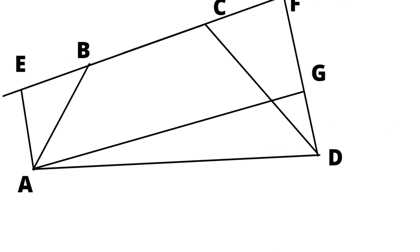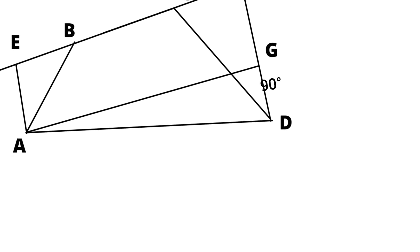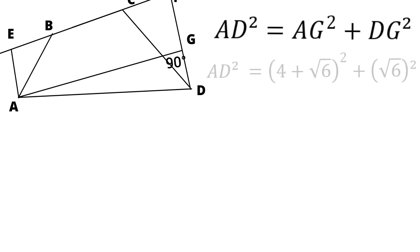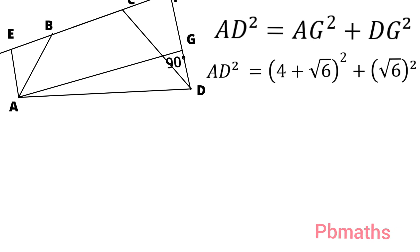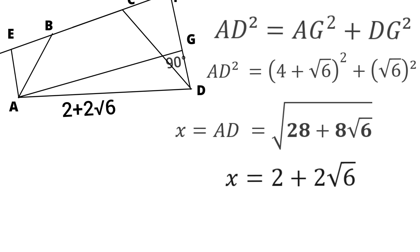Triangle AGD is right-angled at G. Using the Pythagorean theorem, AD squared equals AG squared plus DG squared, giving (4 plus root 6) squared plus (root 6) squared. By simplification, x equals the square root of 28 plus 8 root 6, which equals 2 plus 2 root 6. So the length of AD equals x equals 2 plus 2 root 6.